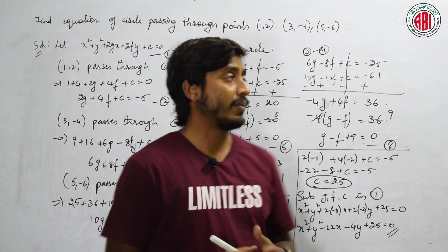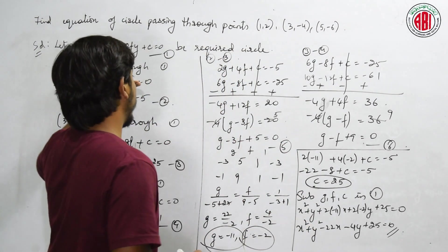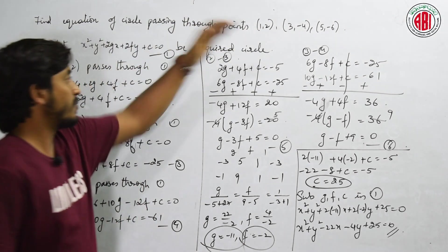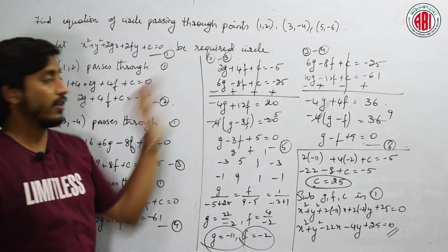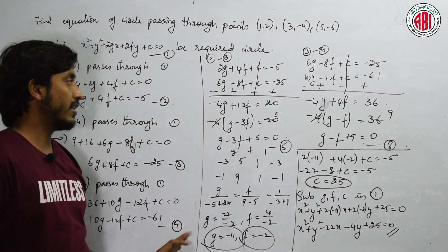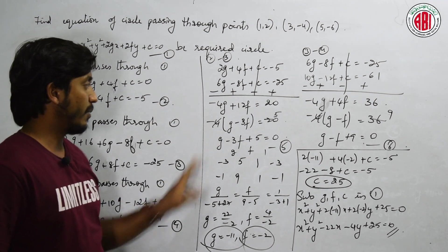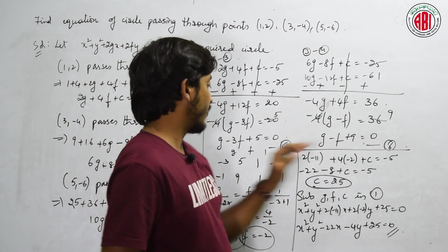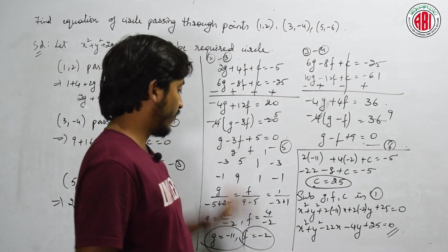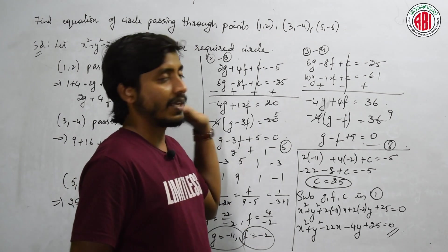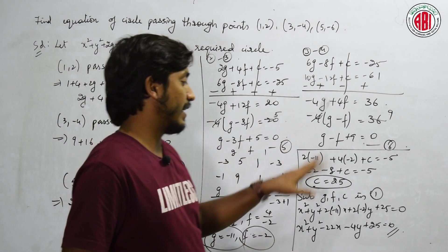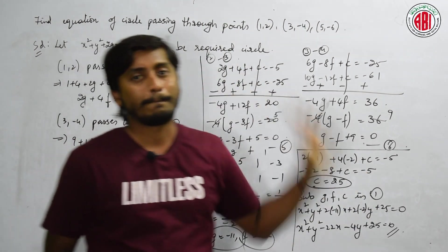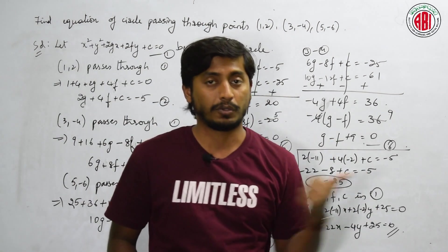What did we do in this problem? Again, assuming the standard equation first, substituting the first, second, and third points gives 3 equations. Subtracting 2 minus 3 and 3 minus 4 gives equations 5 and 6. Solving those gives g and f. Substituting in any one equation gives c. Substituting all g, f, c in equation 1 gives the required equation.